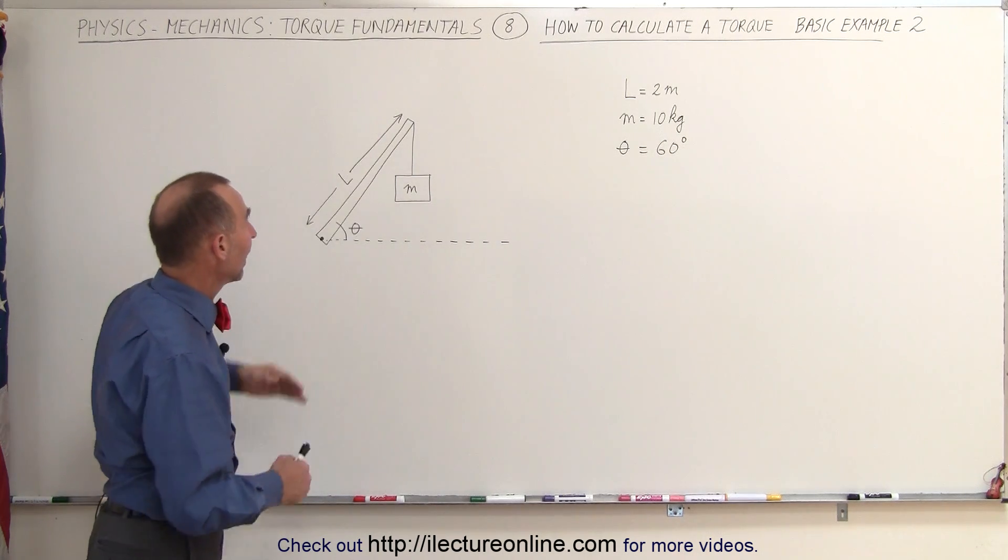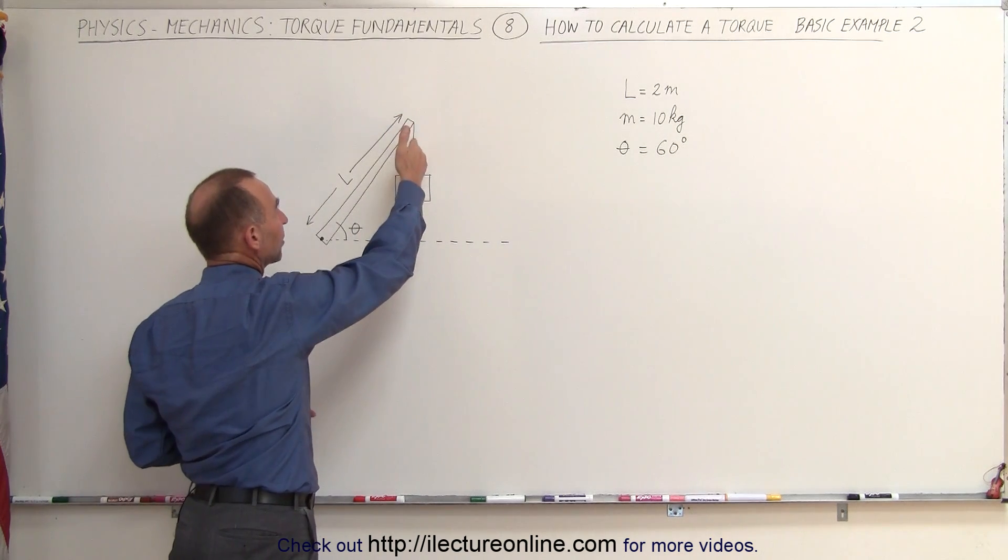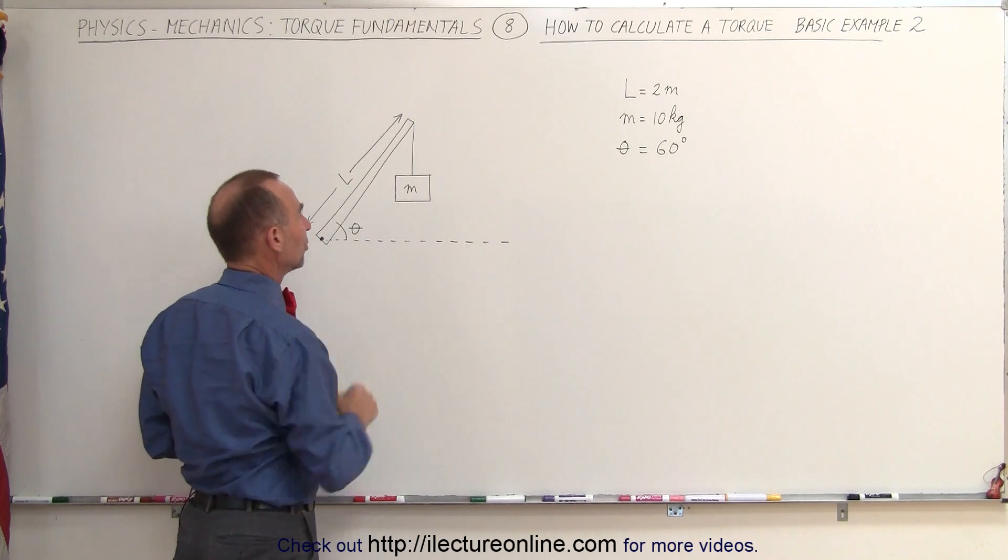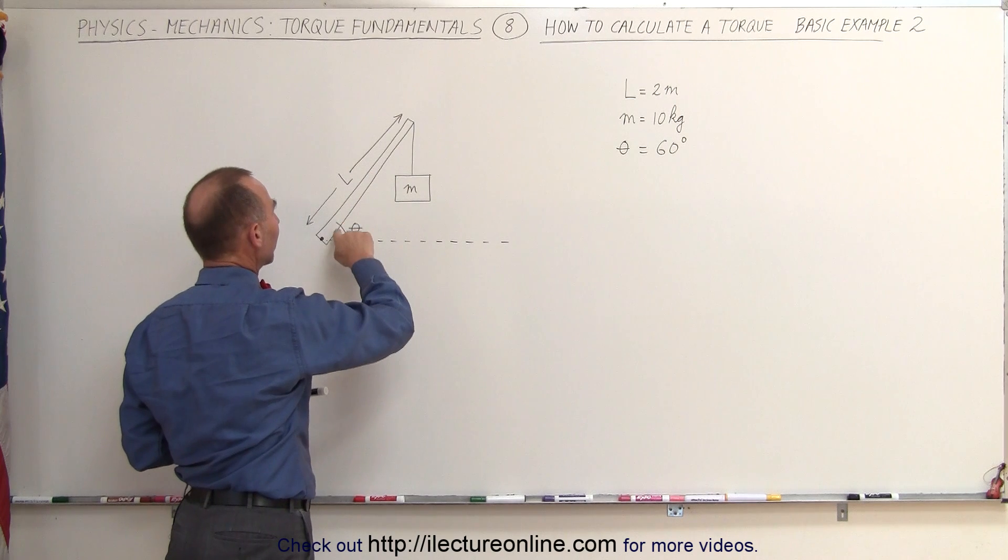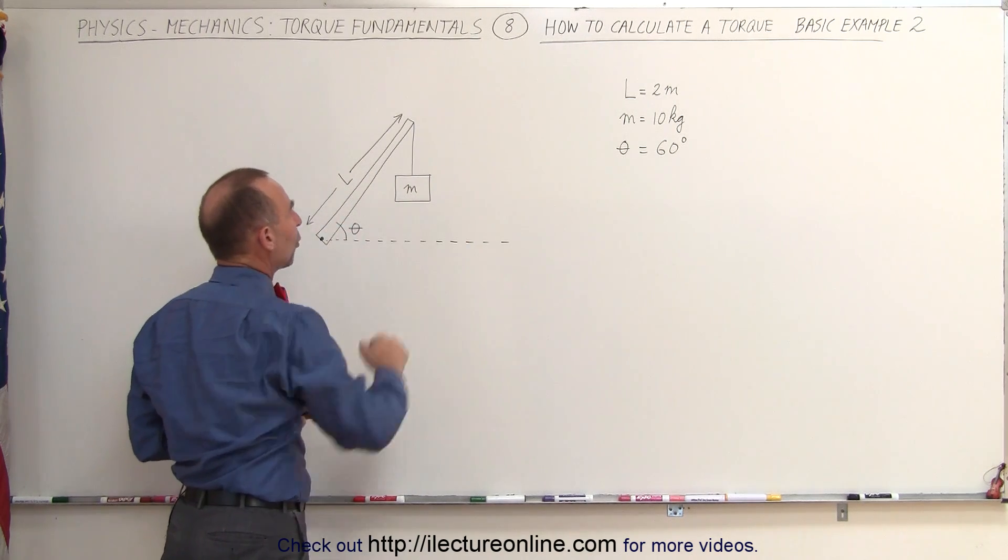Here we have a beam, and from the end of it we have an object hanging from a cable. It has a certain amount of mass, the mass is 10 kilograms, the length of the beam is 2 meters. The beam makes an angle of 60 degrees with the horizontal.